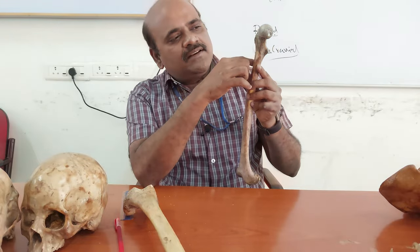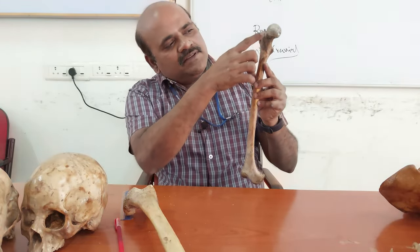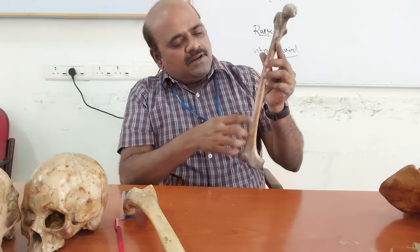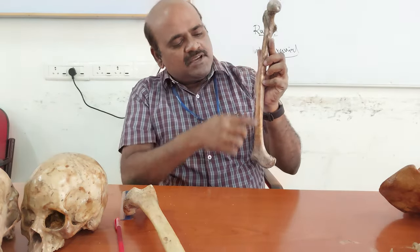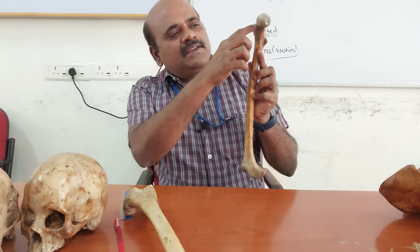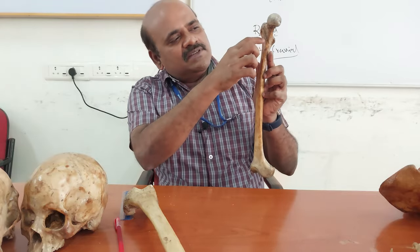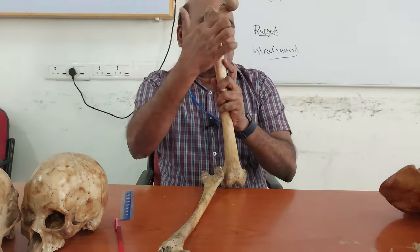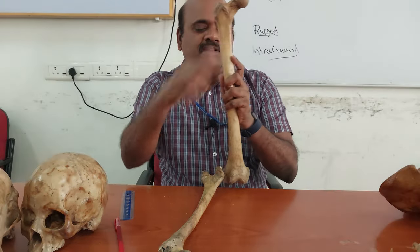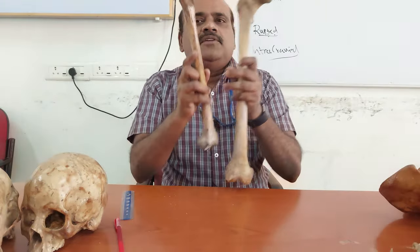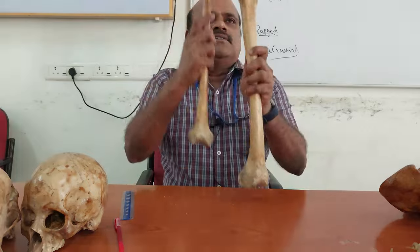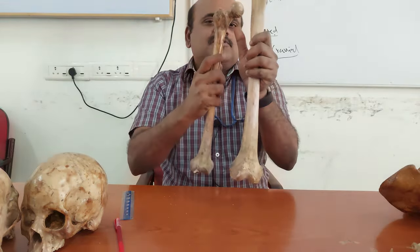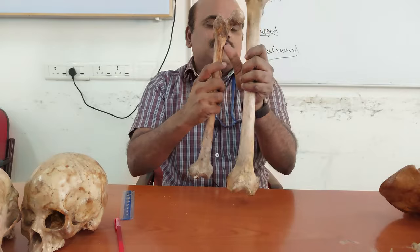Then comes the neck-shaft angle: draw a line along the middle of the neck portion and a straight line along the middle of the shaft; where they intersect gives the neck-shaft angle. In the male, since the femur is more upright, the angle is more obtuse — more than 125 degrees. In the female it is less than 125 degrees — less obtuse. Both are obtuse, but the male is more obtuse and the female less obtuse.